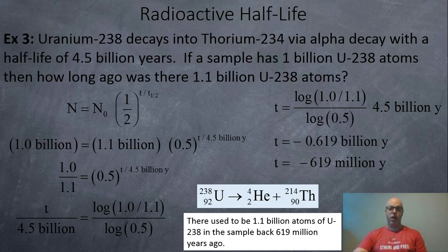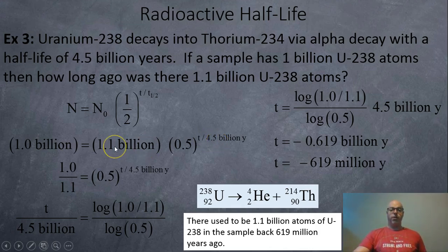So we're going to do a backwards question this time. We have 1 billion atoms now, we want to know when did we have 1.1 billion. So we're going to use the one half or 0.5 to the power of t over four and a half billion years. So all we have to do is divide the 1.1 over, so we get 1 over 1.1 equals 0.5.